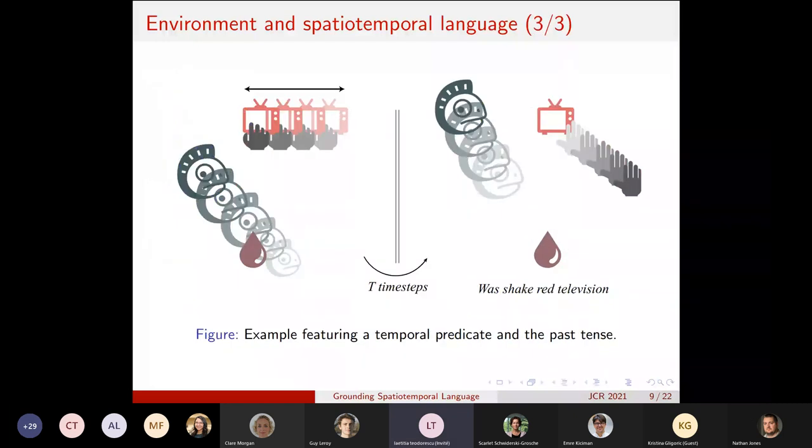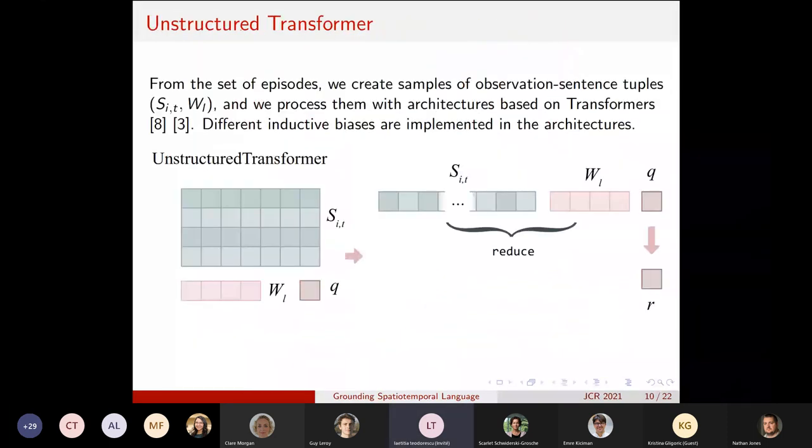So here there is another illustration illustrating temporal predicates and also the past tense for these temporal predicates. So first, the agent grasps the TV and shakes it. So this happens over a time interval and this is the temporal predicate aspect. After a few time steps, the agent releases the TV and moves away. So the action of shaking is considered in the past and is no longer true in the present. Hence, one of the descriptions that is generated at the end of the episode is 'was shake red television.'